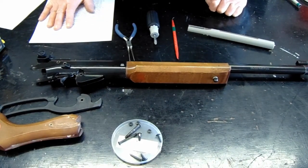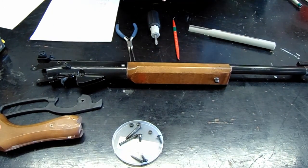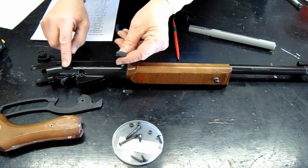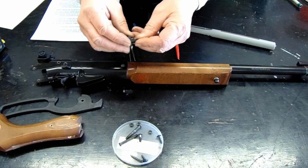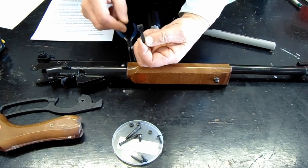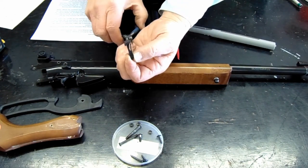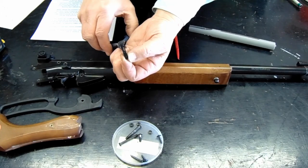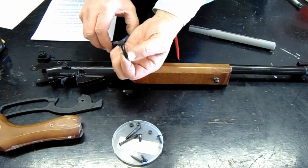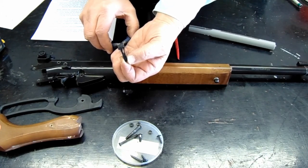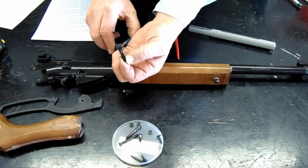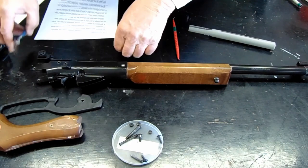So the next step is going to be to remove the safety. The safety sits in the side of the gun here, and the trick to removing the safety is this little tab. So I'm going to reach inside the gun with my needle nose pliers, depress that tab, and then take it out of the gun.